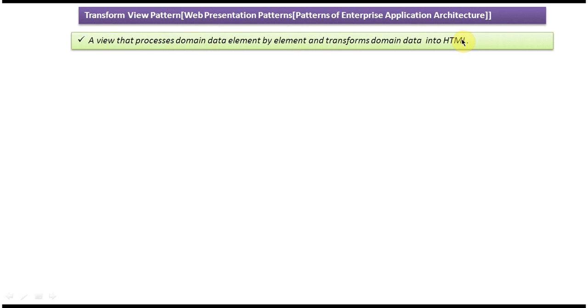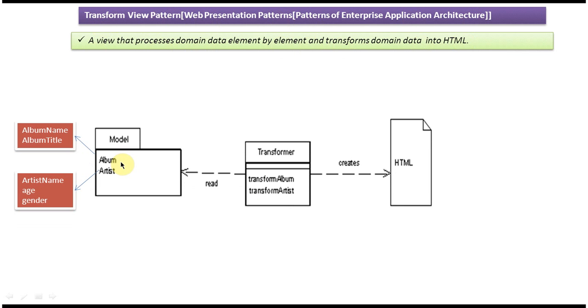We will see an example so that you'll understand the sentence. You can see three important components here: model, transformer, and HTML. You can see in model there are two domain data: one is album, another one is artist. This album domain object has two attributes: album name and album title. This artist has three attributes: artist name, age, and gender.